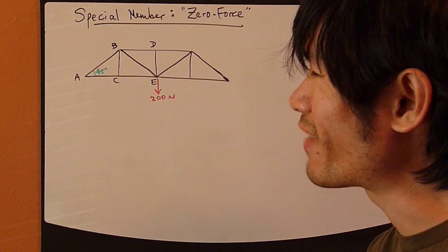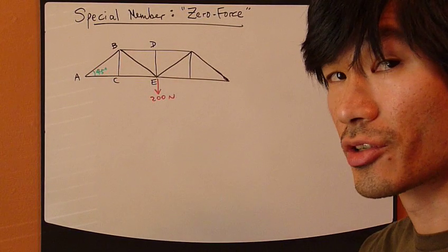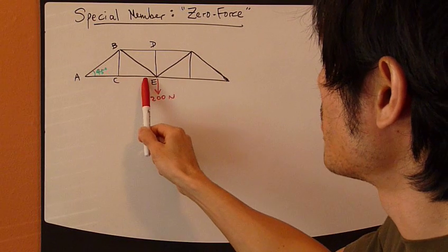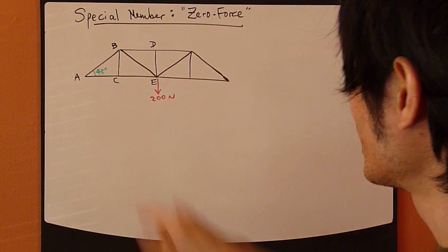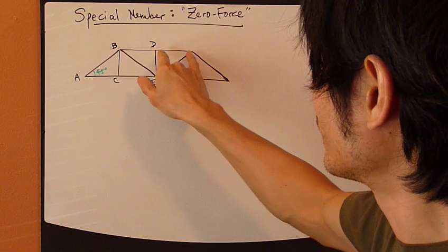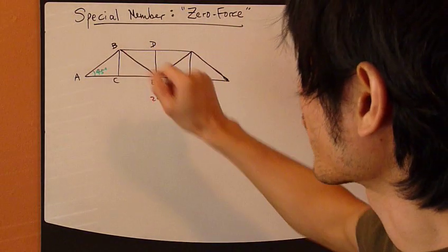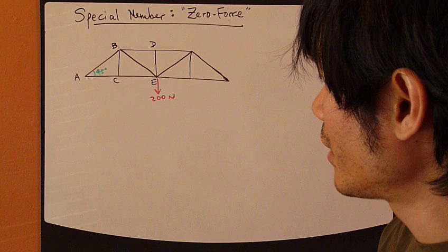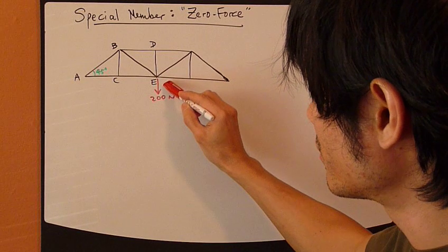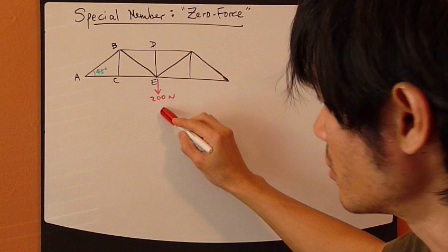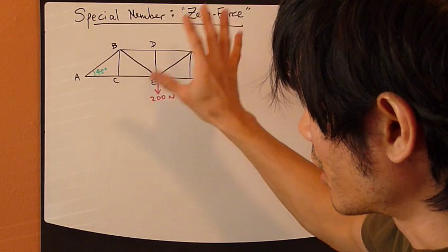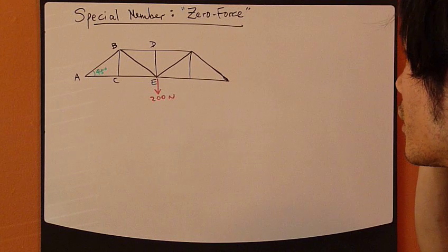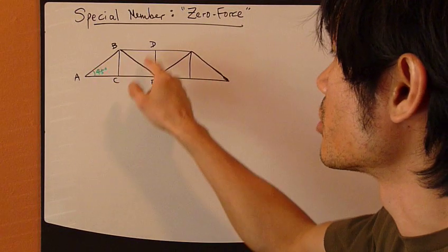Let's first do some calculations and find out if any of the members is a zero-force member. Let's say I have a truss like this. And each member across the bottom chord has equal length. And across the top chord, same thing. Equal length. And all the slanted members have 45-degree angles. Let's do some calculations.